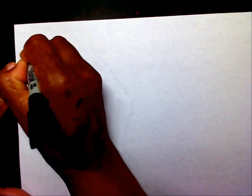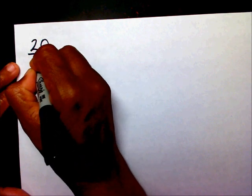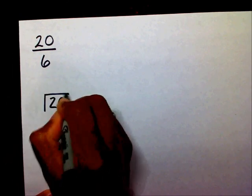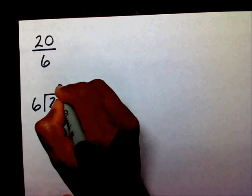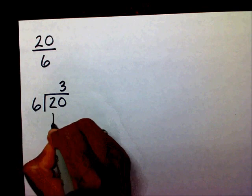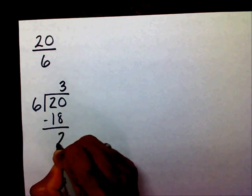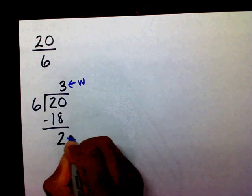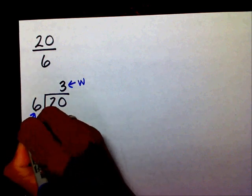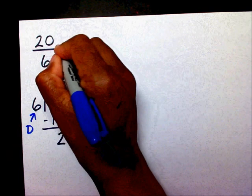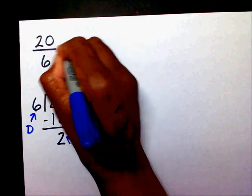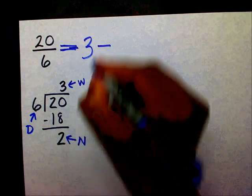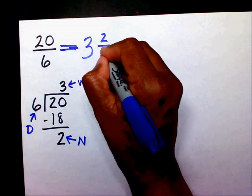Let's try another one — twenty-sixths. I'm going to write twenty divided by six. Six will go into twenty three times. Three times six is eighteen. I'm going to subtract, leaving me with a remainder of two. This is my whole number, this is my numerator, this is my denominator. So I'm going to write my whole number, which is three, draw my fraction bar, my two goes in the top, my six goes in the bottom.